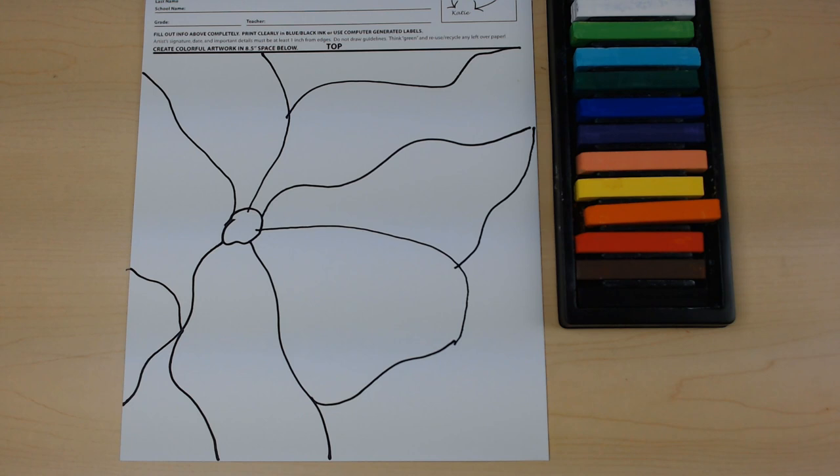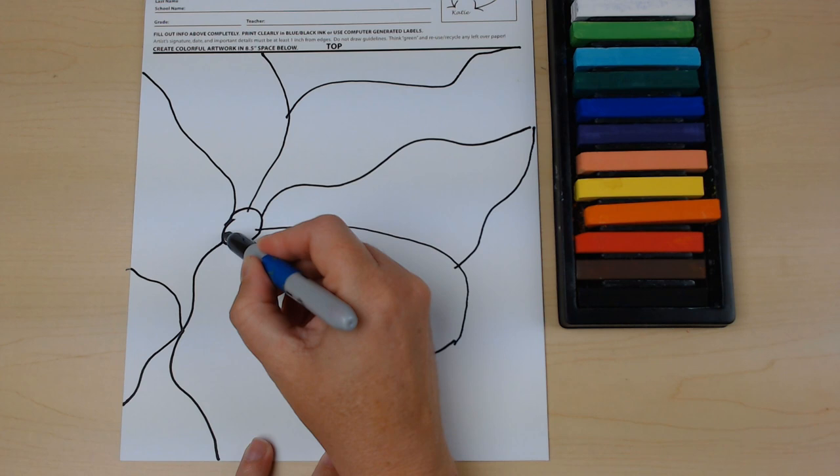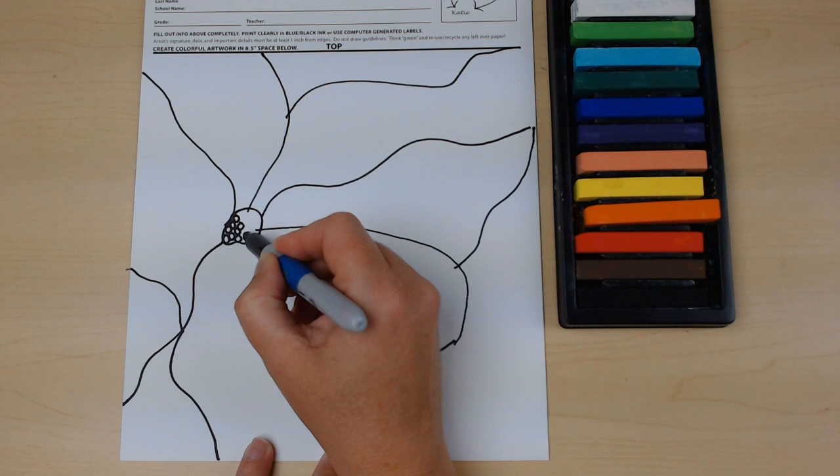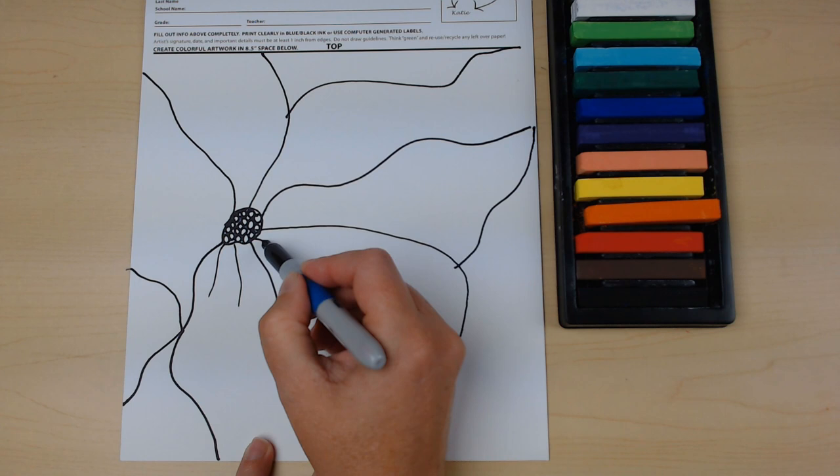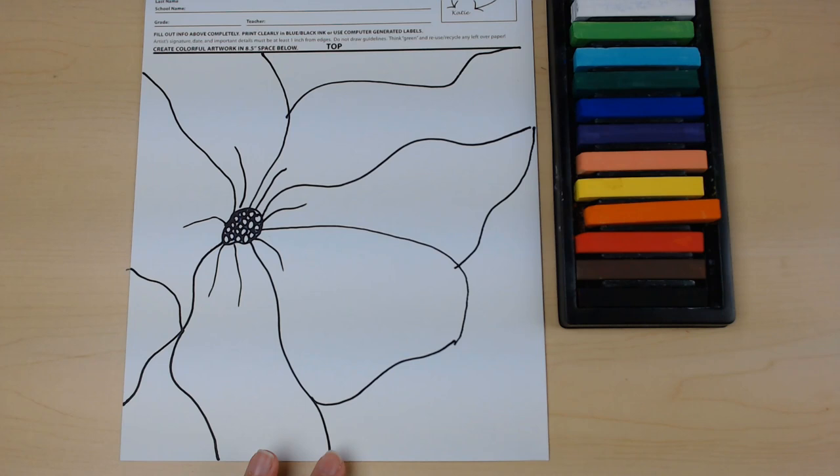Now, we're going to keep drawing and we can add some details to the center of our flower if we want it to have some dots here in the center. Just draw your details in that you want in your flower. Just drawing little details, not a lot, just little details. Maybe some lines going out.